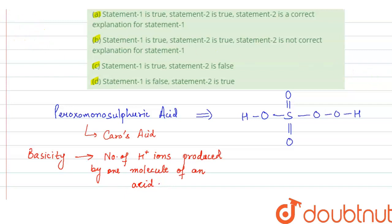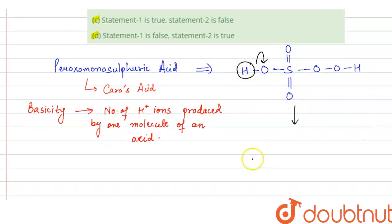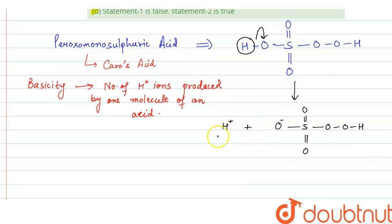Looking at the structure of per oxo monosulfuric acid, it has only one ionizable hydrogen ion — the hydrogen directly attached to oxygen. Since oxygen is more electronegative, this bond will break and hydrogen will be lost. So H⁺ will be separated out, forming O⁻-S(=O)(=O)-O-O-H. It can produce only one H⁺ ion, so per oxo monosulfuric acid has a basicity of 1, which is the minimum value.